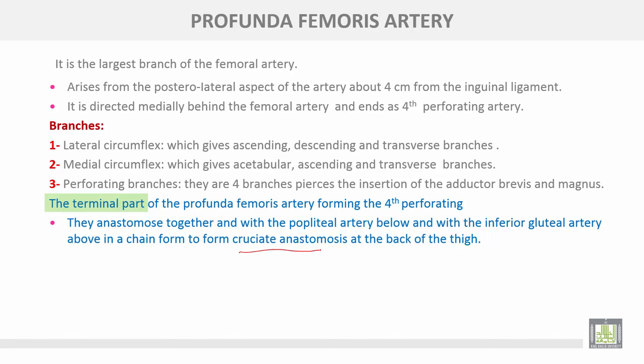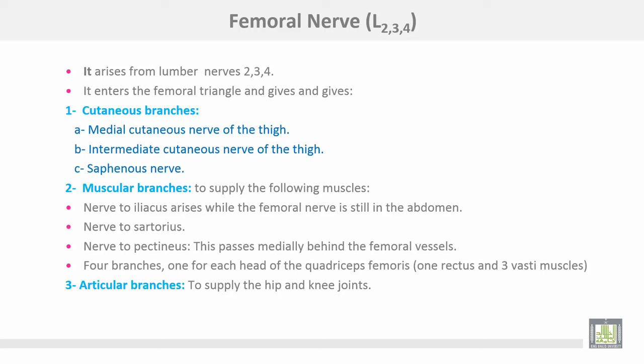The femoral nerve arises from lumbar 2, 3, and 4 of the lumbar plexus. It enters the femoral triangle and gives many branches. Cutaneous branches include the medial cutaneous nerve of the thigh, the intermediate cutaneous nerve of the thigh, and the saphenous nerve. Muscular branches supply: iliacus (while the femoral nerve is still in the abdomen), sartorius, pectineus — which passes medially behind the femoral vessels — and four branches, one for each head of quadriceps femoris: one for rectus femoris and three for the three vasti muscles.